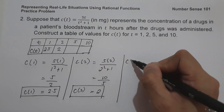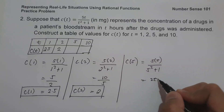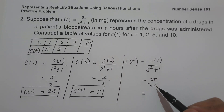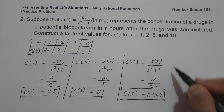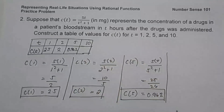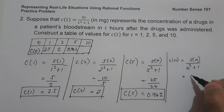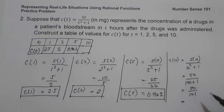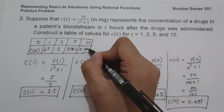When t = 5, c(5) = 5×5 / (5² + 1) = 25/26 ≈ 0.962. And lastly, when t = 10, c(10) = 5×10 / (10² + 1) = 50/101 ≈ 0.495. These are the values of c(5) and c(10), completing the table.